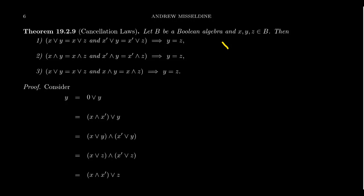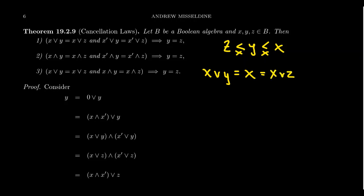To see why both hypotheses are needed, take z less than y less than x with strict inequalities. Since x is greater than y, x join y equals x, and since x is greater than z, x join z also equals x. So x join y equals x join z, yet y does not equal z — so we cannot infer y equals z from just one hypothesis. Similar counterexamples can be constructed for the other cases.